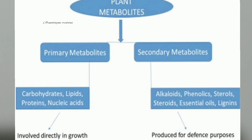Now we are going to learn about the types of secondary metabolites in plants. Examples are alkaloids, tannins, resins, gums, latex, etc. Secondary metabolites are not useful for plants, but human beings are making use of them. We are using those secondary metabolites of plants for our convenience and for our beneficial activities.